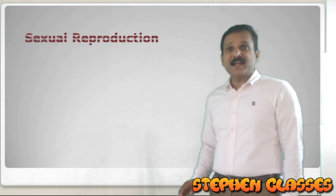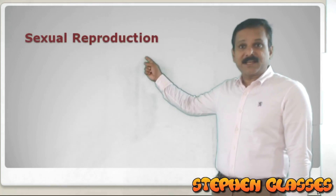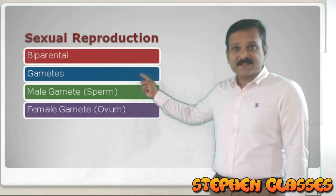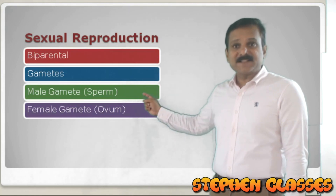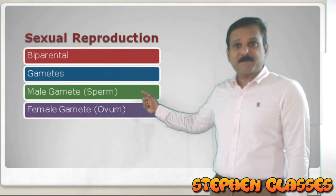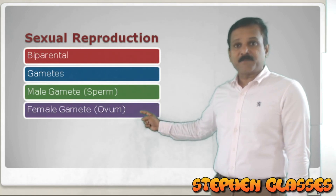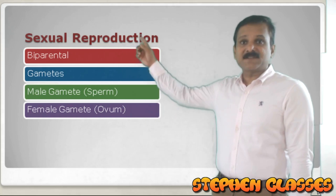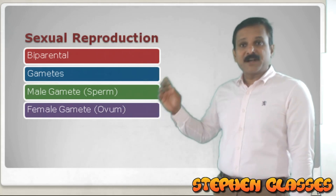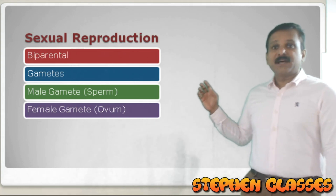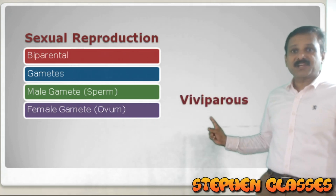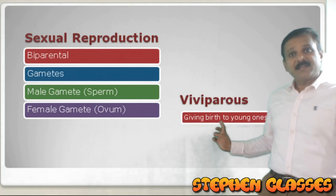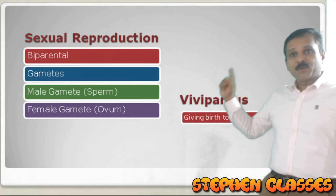Human reproduction is a kind of sexual reproduction and it is viviparous. The important points: in sexual reproduction there is formation of gametes. The two types are the male gamete, also called the sperm cell, and the female gamete, called the ovum. These two gametes fuse and fertilization occurs. The definition of viviparous is giving birth to a young one.